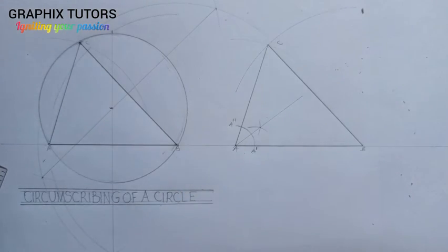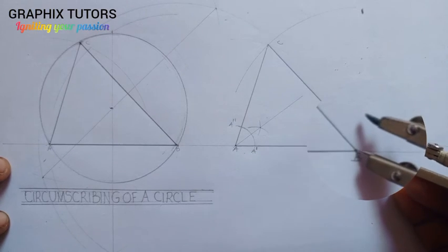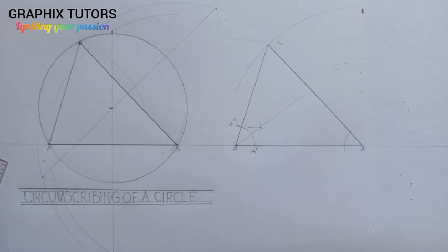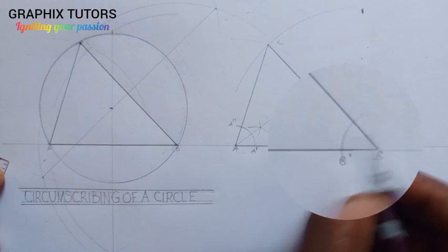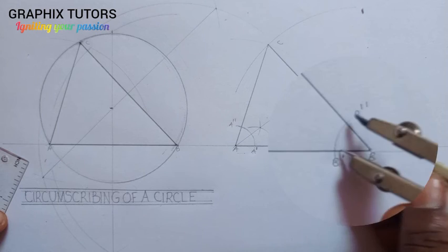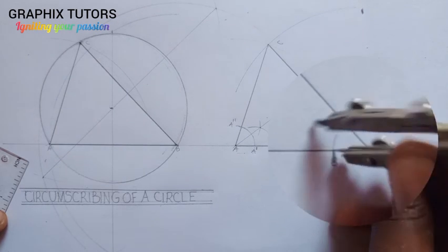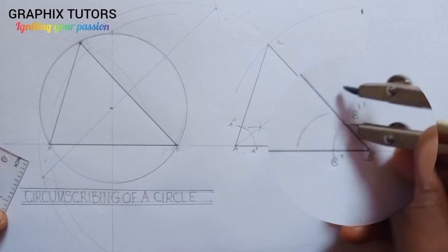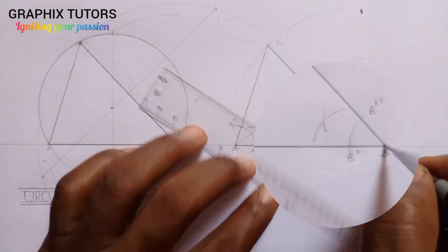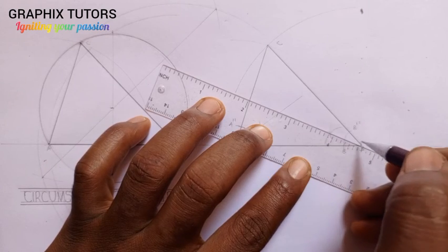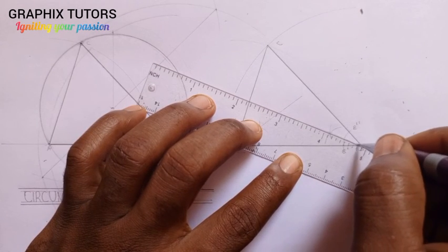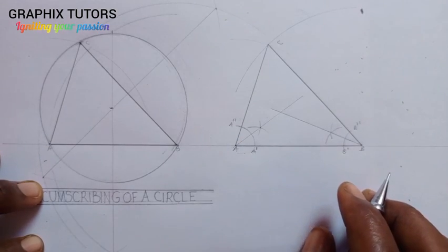Now do the same for angle B. Place the compass at point B and strike an arc, marking where it cuts the sides as B' and B''. Place the compass at B' and strike an arc, then at B'' strike another arc. Where they intersect, draw a line from B passing through the center point.